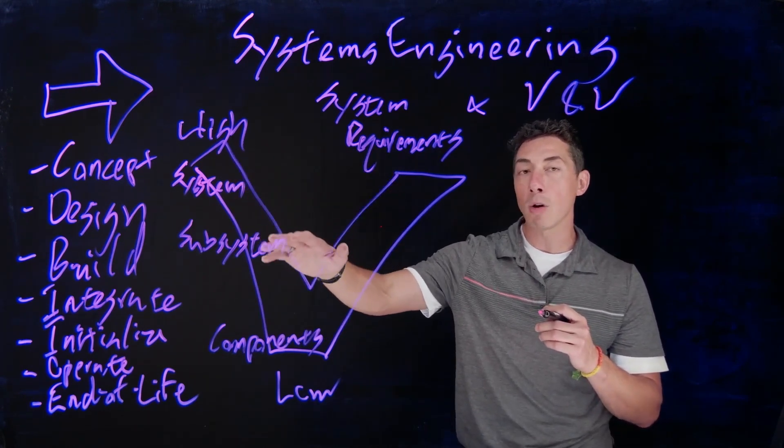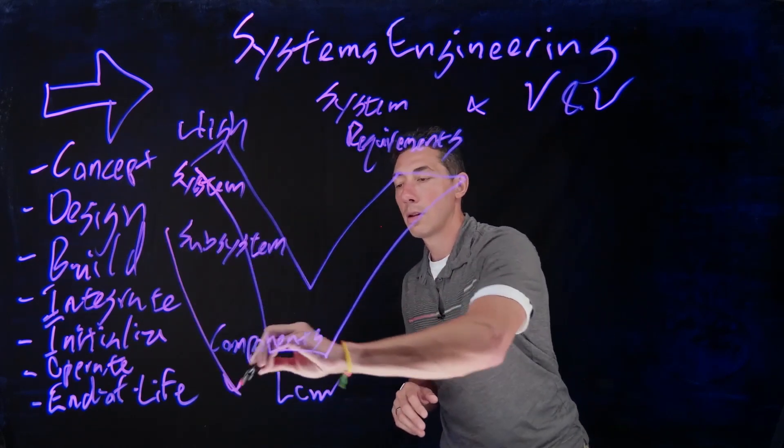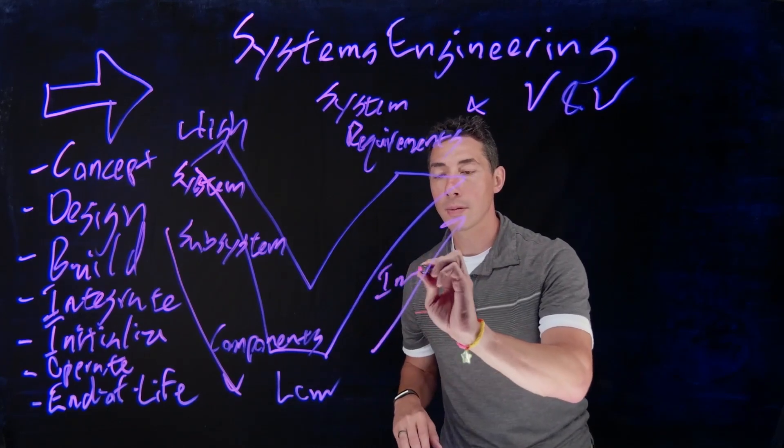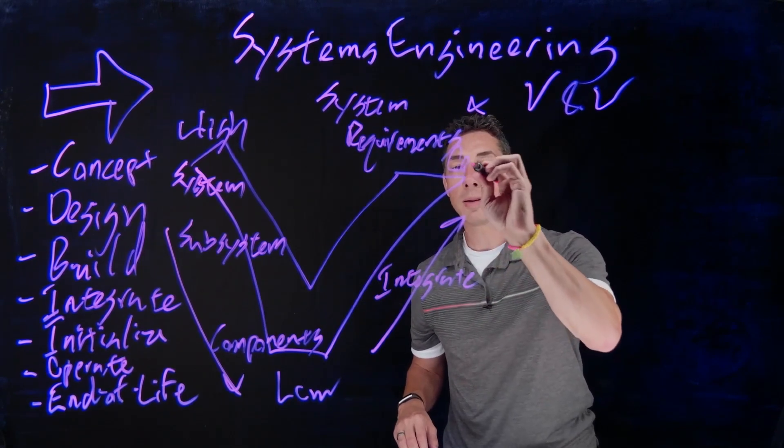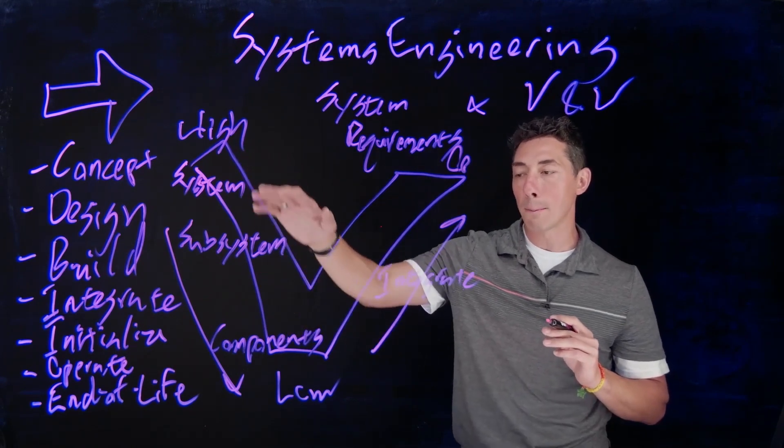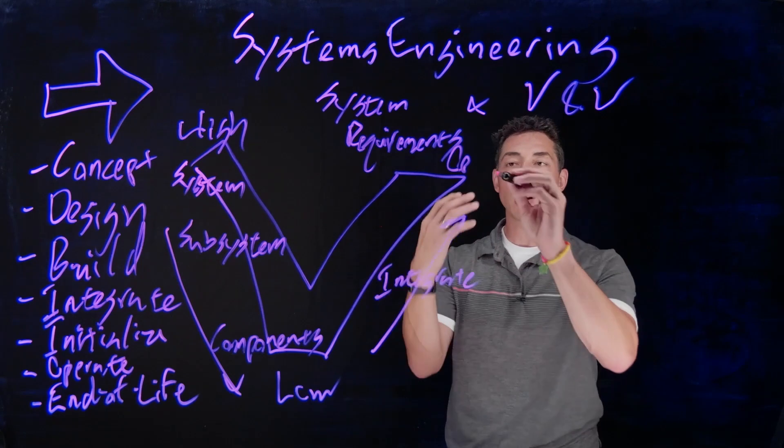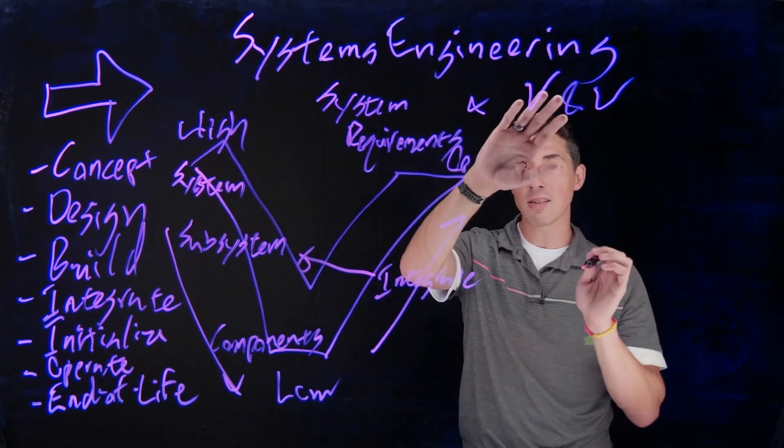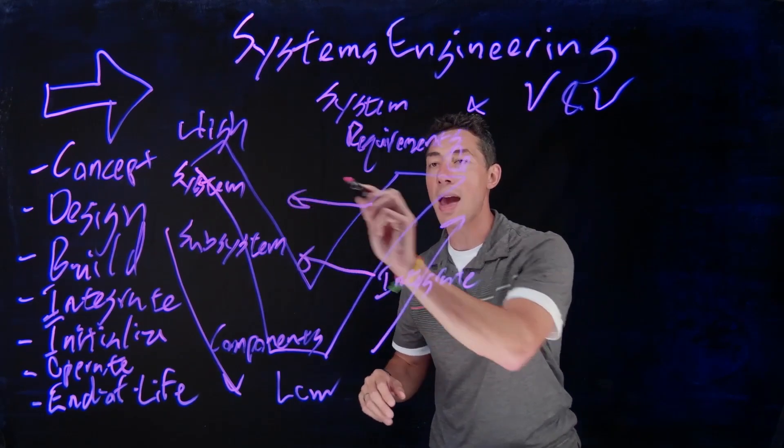And a good system engineer will help you write those requirements and distribute those out. And then once you've got those built, you're going to then start integrating and then you're going to operate the entire system. So as you go down, you're going to build the system and then you're going to integrate those pieces together. And then you're going to go into operations.